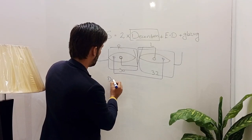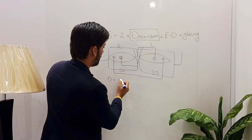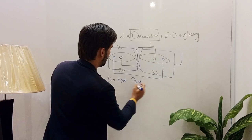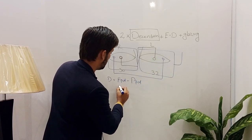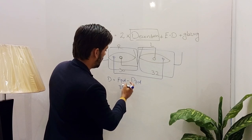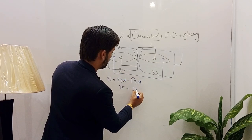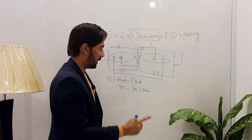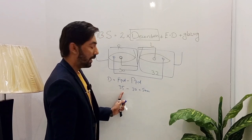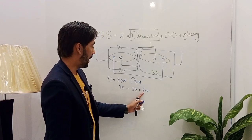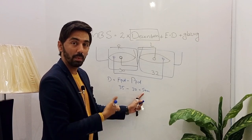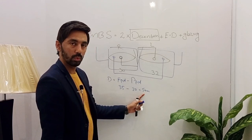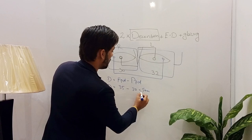For the right eye, decentration = monocular frame PD − patient's PD = 35 − 30 = 5 mm. Note: in this case we do NOT divide by 2, because we are already using monocular PD values. So the decentration for the right eye is 5 mm.